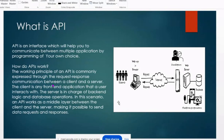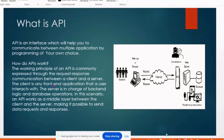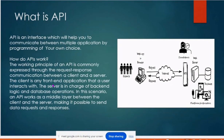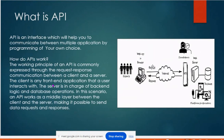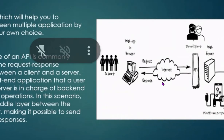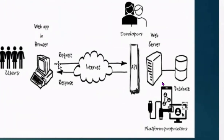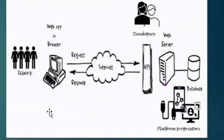My topic is how to test an API. First of all, what is an API? An API is an interface which will help you to communicate between the client and the server. The client is any web application on our computer. The client sends a request to the server and the server sends a response. The API acts as a middle layer between the client and the server, making it possible to send requests and get responses.